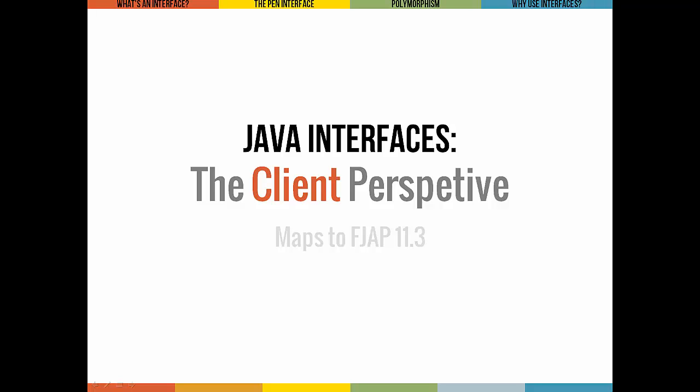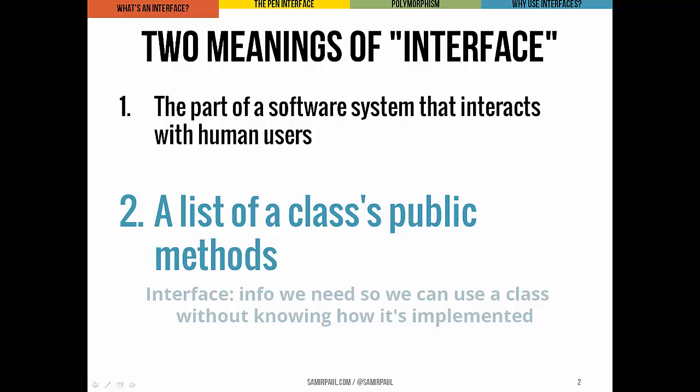We'll now use the turtle graphics package that we looked at in the last lecture to begin to discuss some ideas of inheritance. The first topic will be how we use interfaces. The word interface is usually used in one of two different ways. On the one hand, an interface is a part of a software system that interacts with human users — it's like what you actually see when you run a program. On the other hand, it's a list of a class's public methods. In this unit, we're going to use the term in the latter sense.